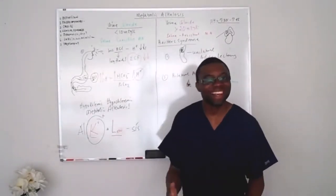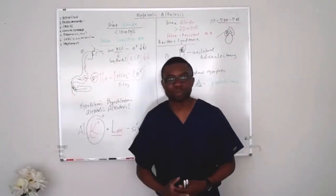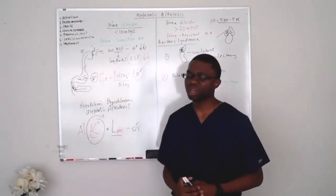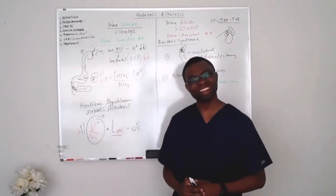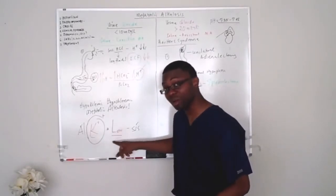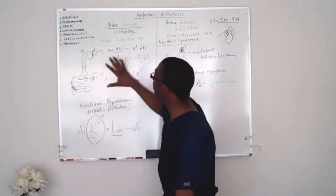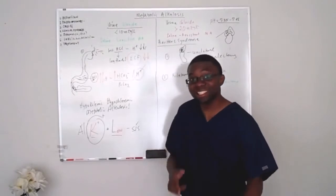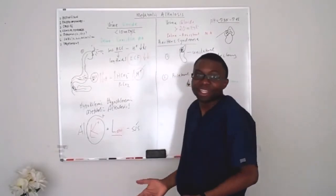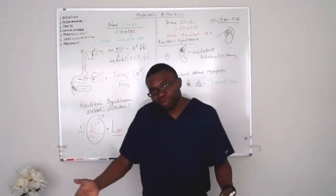For saline-sensitive metabolic alkalosis: the patient lost too much fluid, so we give them normal saline back — 0.9% normal saline. But is that enough? No. Because of the alkalosis mnemonic, they've also lost potassium — give them potassium back. That is how we treat saline-sensitive metabolic alkalosis, because it's sensitive to saline. You come in, something's missing, you put it back in, and you go home feeling good.